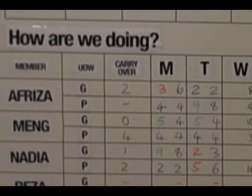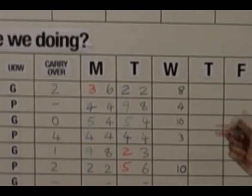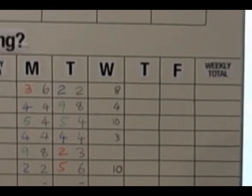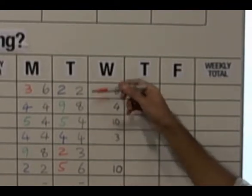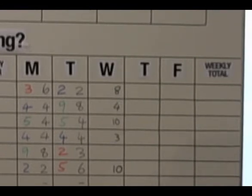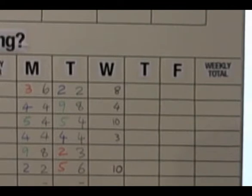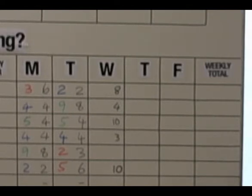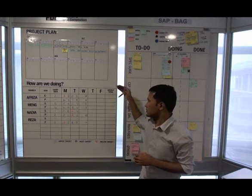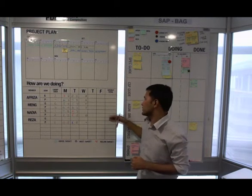We have Monday to Friday columns where we fill in how many units of work we estimate to work on that particular day. The next day, when we review the VCB, we fill in how many units of work we have achieved — either above target, mid target, or below target. We use three colors: green if it's above target, blue if it's mid target, and red if it's below target. By the end of the week, we accumulate all the units of work done for that week.